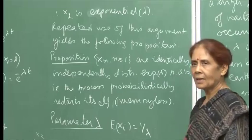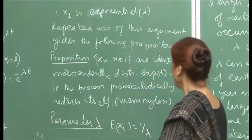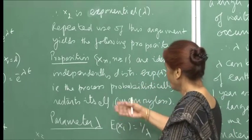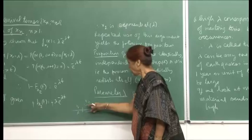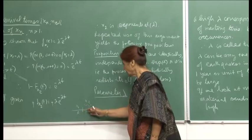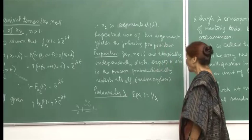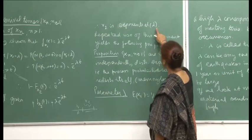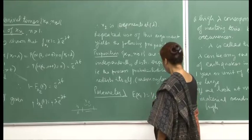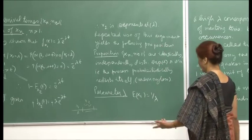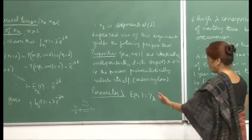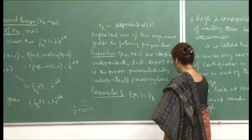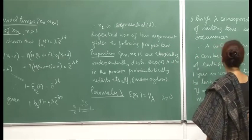Every time an event occurs, the process starts itself again — there is no memory as to when the last event occurred. When counting inter-arrival times, it rejuvenates itself. Since the distribution is exponential(λ), E[xi] = 1/λ. Lambda can be any positive number, as the theory of exponential distribution places no constraint beyond λ > 0.